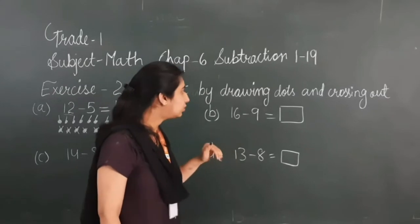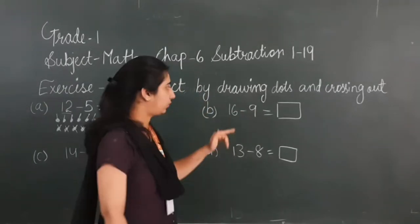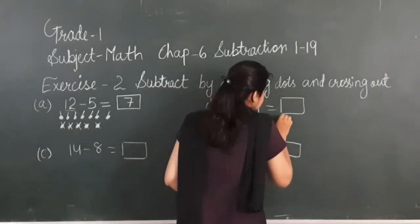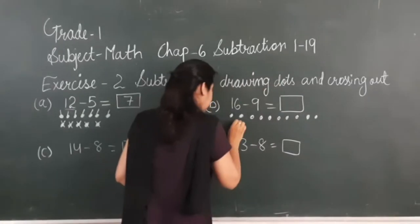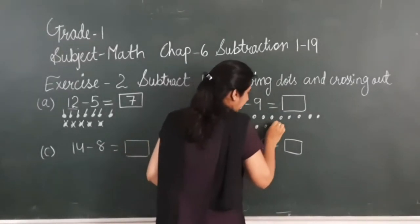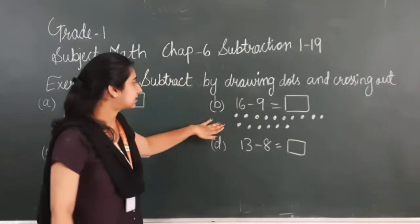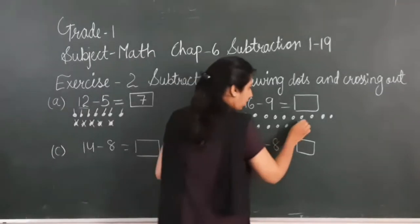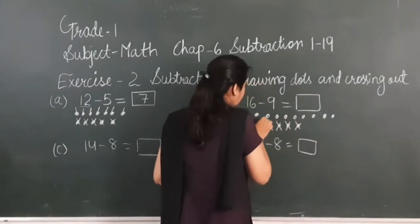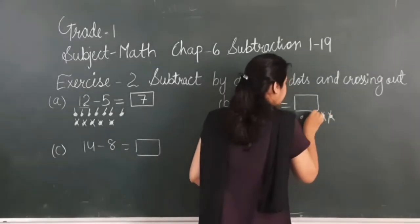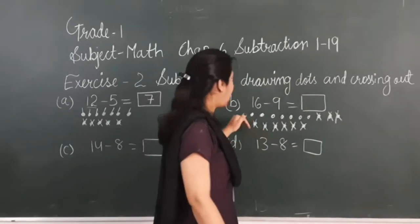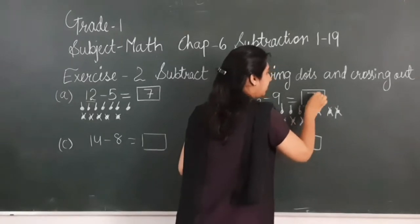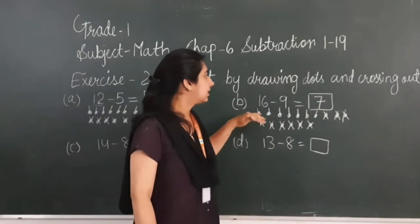16 minus 9. We have to subtract 9 from 16. So firstly I will draw 16 dots: 1, 2, 3, 4, 5, 6, 7, 8, 9, 10, 11, 12, 13, 14, 15 and 16. Among those 16 dots, now I will cross out 9 dots: 1, 2, 3, 4, 5, 6, 7, 8, 9. So after crossing 9 dots, how many are remaining? 1, 2, 3, 4, 5, 6, 7. After crossing 9 dots from 16, 7 are left.